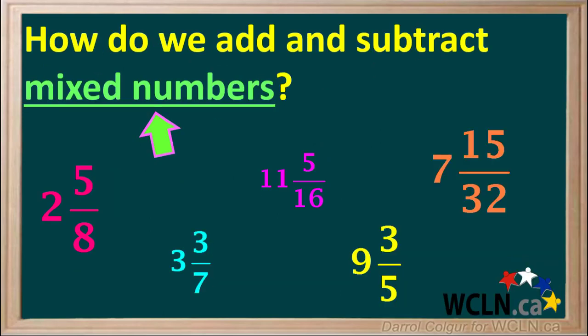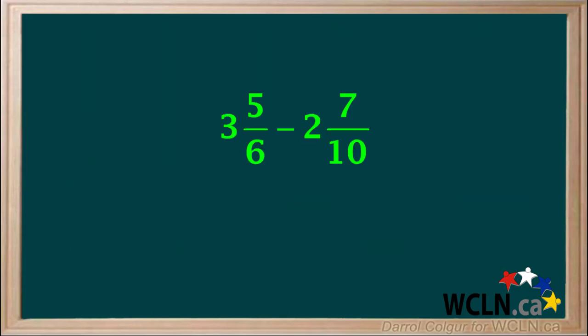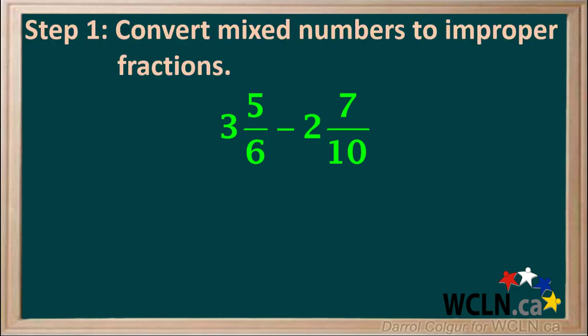At this point, you've probably had lots of practice adding and subtracting both whole numbers and fractions. But what about mixed numbers? How do we add and subtract these? We'll go through the steps using an example. Let's say we have 3 and 5 sixths minus 2 and 7 tenths.